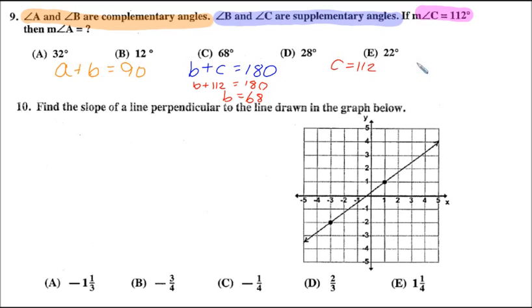Let's start jotting all this down. The measurement of angle C is 112. The measurement of angle B is 68. Now that we know the value of B is 68, we can substitute that in here. So A plus 68 equals 90.